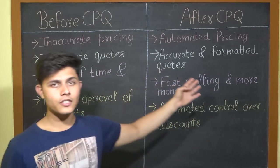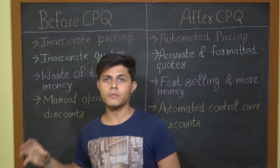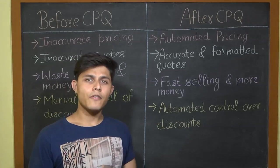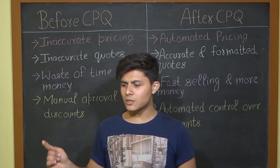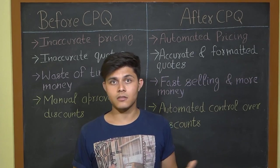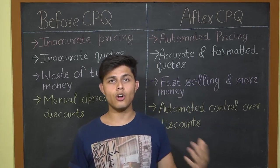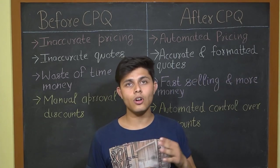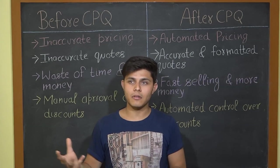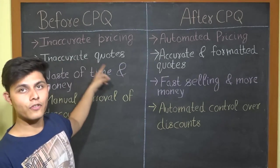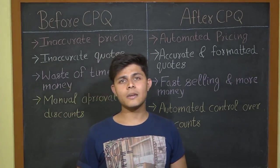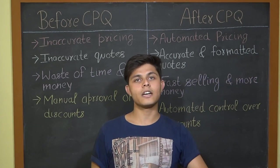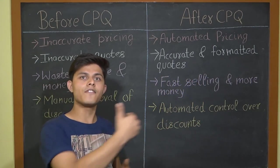Now let's look at the benefits — before CPQ versus after CPQ. The first point is inaccurate pricing. Before CPQ, sales representatives manually looked at spreadsheets and wrote prices by hand, leading to errors. If a product costs ten thousand dollars but a rep mistakenly wrote five thousand, that lower price would have to be honored after presenting the quote, costing the company significantly. After CPQ, pricing is automated — the base list price populates automatically when products are configured.